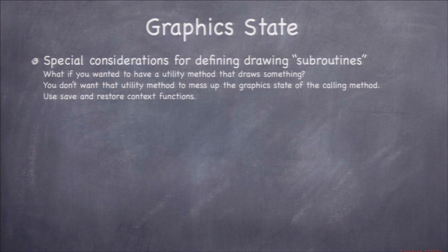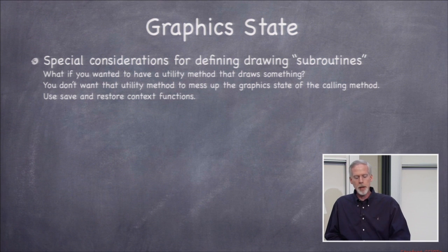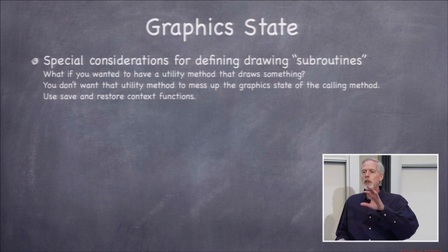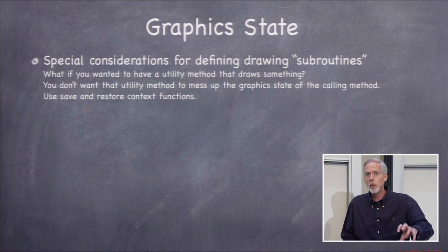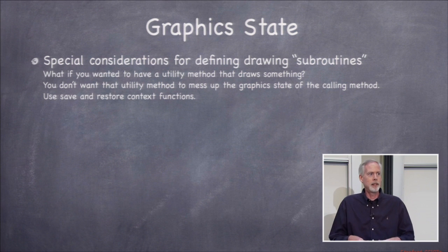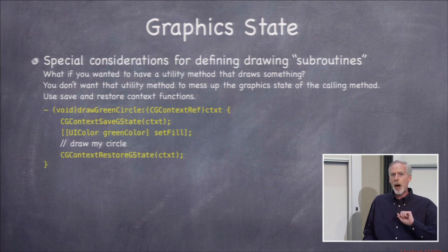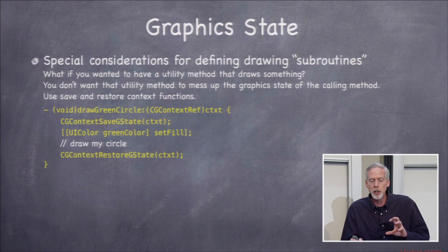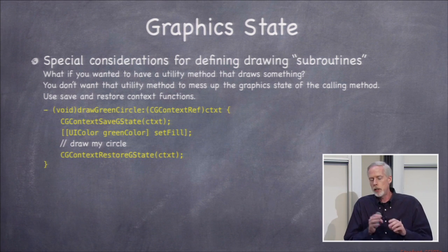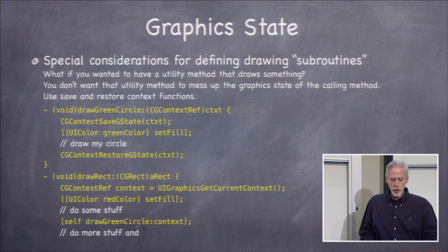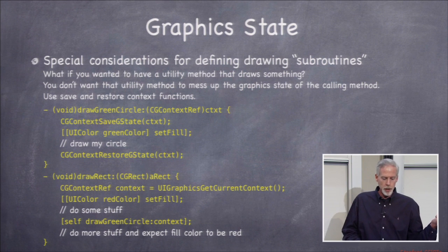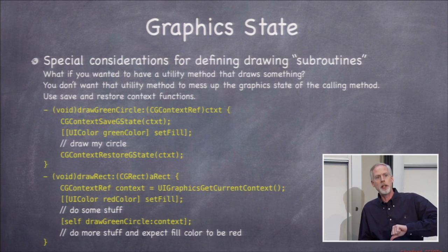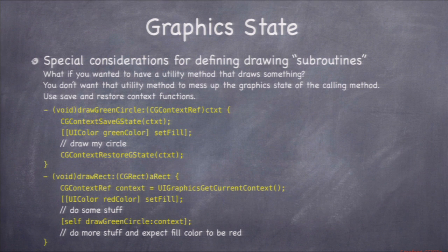If you're setting fill colors and clipping in a subroutine, when you return, those settings might still be active — which would be bad. You can push and pop your graphics state using CGContextSaveGState and CGContextRestoreGState. This saves everything — fill colors, clipping regions — you do your drawing, then restore back to the previous state. So your drawRect won't come back with everything still drawing in green after calling a draw-green-circle subroutine.